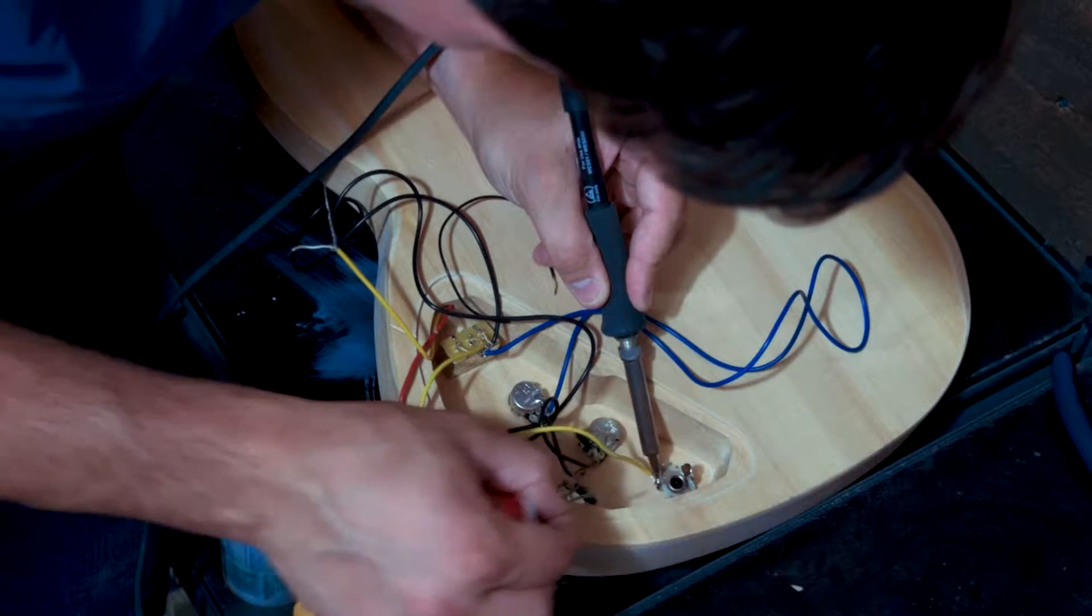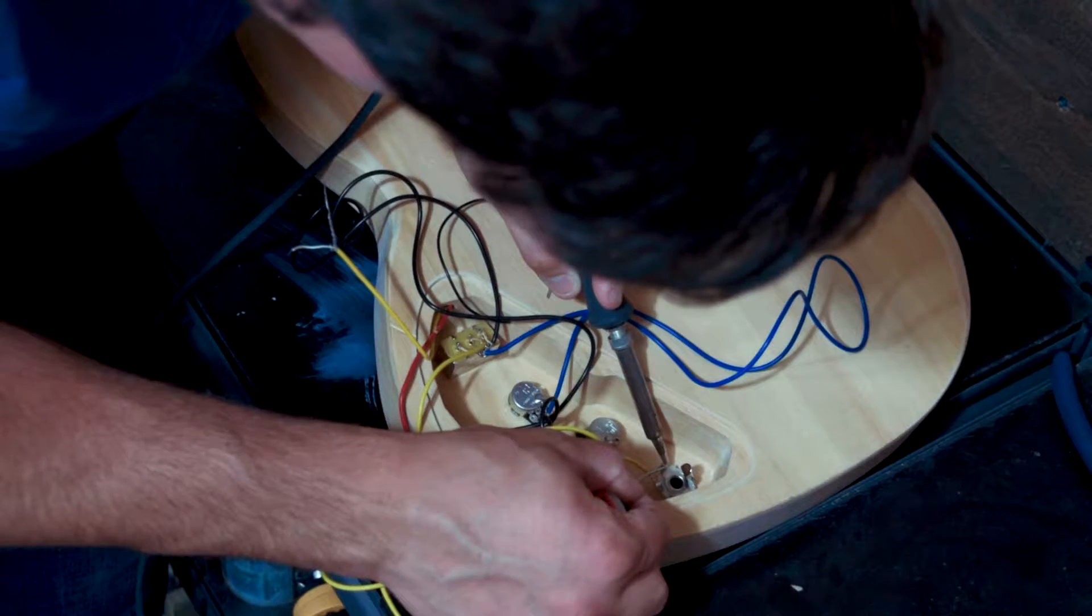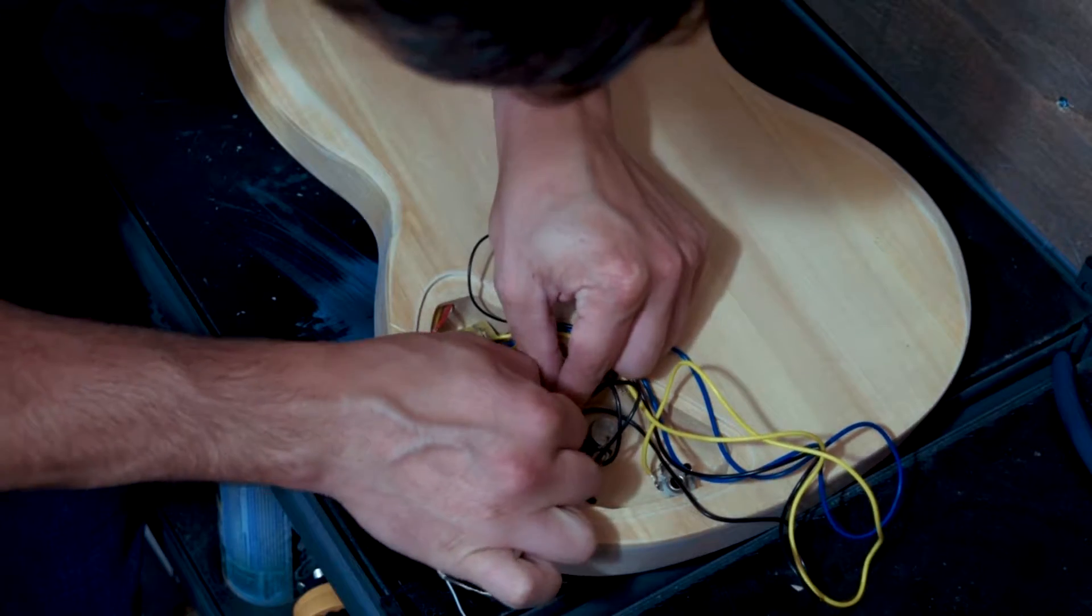And then again, to the output jack, we've got our hot wire, which in this particular case is white, although they won't always be the same. And our bare wire, which goes to ground. If you have a bare wire, it's always ground.